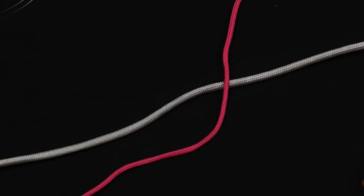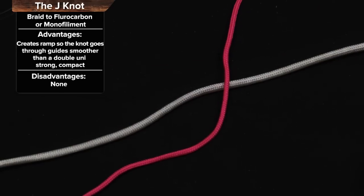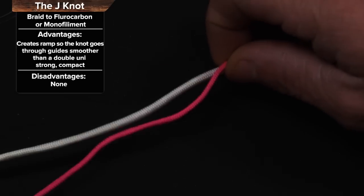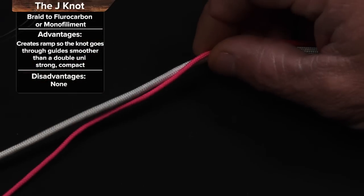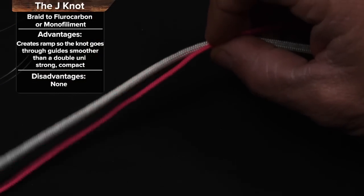Okay, we're going to attach braided line to a fluorocarbon leader with a J knot. It's probably my go-to knot for braid to mono or fluorocarbon. It's very simple.